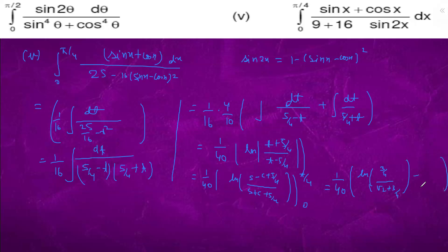On 0 it is ln 1, 1 by 4, 7 by 4, 7 by 4. This is ln 3, 4 root 2 plus 3 minus 1 by 40, ln 1 by 7.